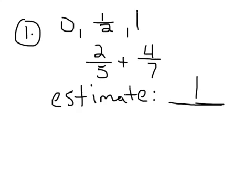Now, if we're going to actually find the sum, we need to do the work. We do not have common denominators. We have fifths and sevenths. The sevenths are smaller but more pieces. The fifths are larger and less pieces. So we need to make these the same size pieces.